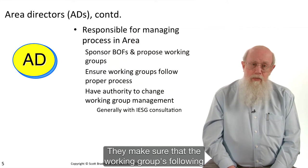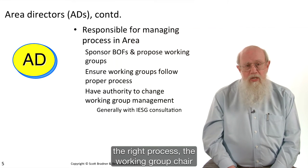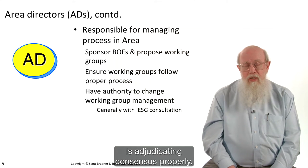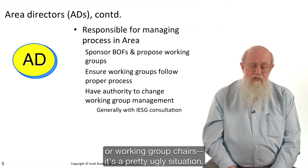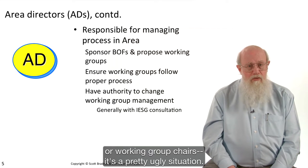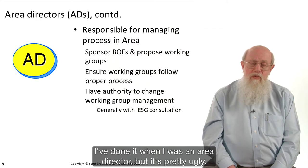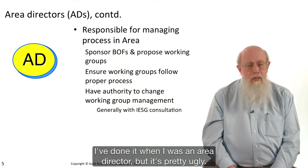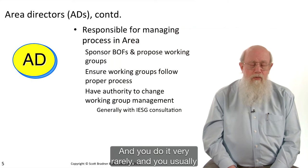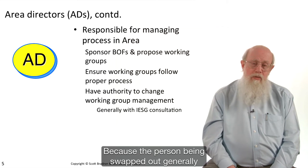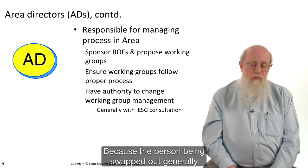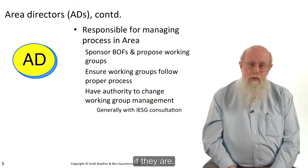Area directors make sure the working group is following the right process and that the working group chair is adjudicating consensus properly. Area directors do have the authority to change working group management — document editors or working group chairs. It's a pretty ugly situation; I've done it when I was an area director, but it's done very rarely. You usually need a lot of backup from the IESG, because the person being swapped out generally doesn't believe they're doing a bad job, even if they are.